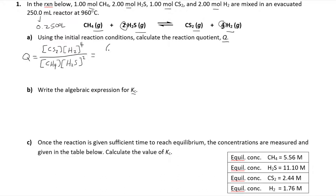Carbon disulfide: one mole over 0.250 L gives us 4.00 molar. Then for hydrogen gas, we've got two moles divided by 0.250, so that's 8.00 molar. Please don't forget that exponent of 4 — really important. Come down here to methane: 1 mole divided by 0.250 gives you 4.00 molar.